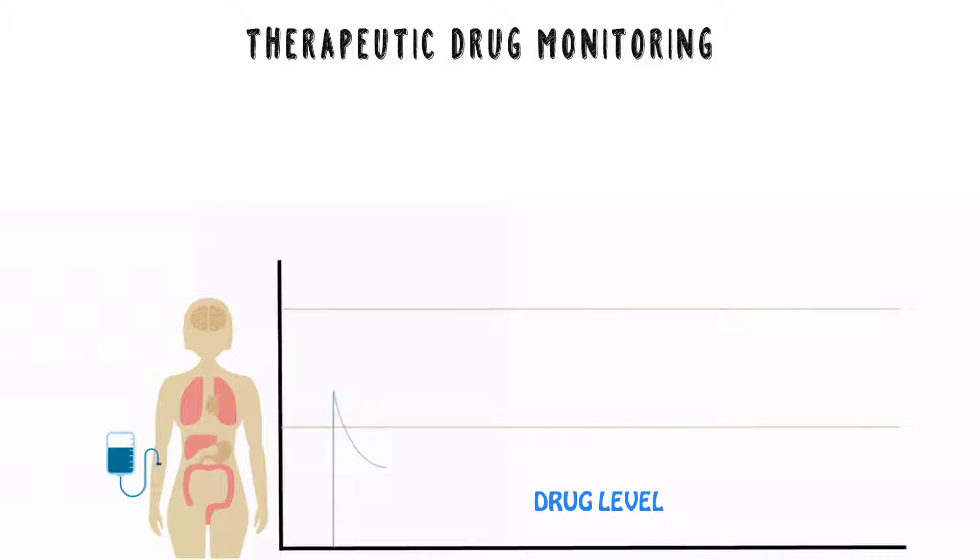When you get another infusion, the drug level goes up again, and then it drops over time as your body uses it up, metabolizes it, or excretes it. When you get the next dose, it will go up again, and over time you will reach a steady state. That's your nice point, that's the drug level that works for you.